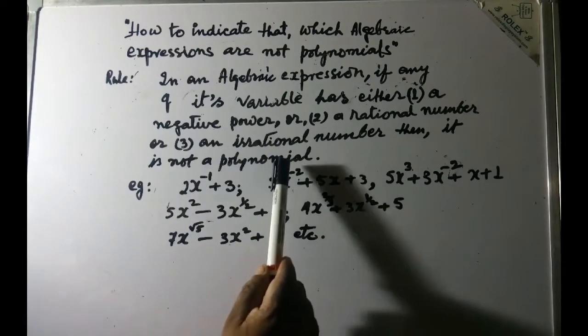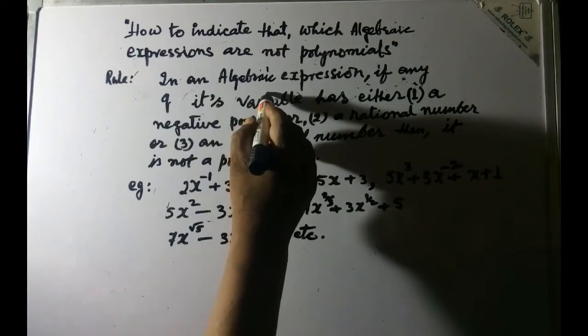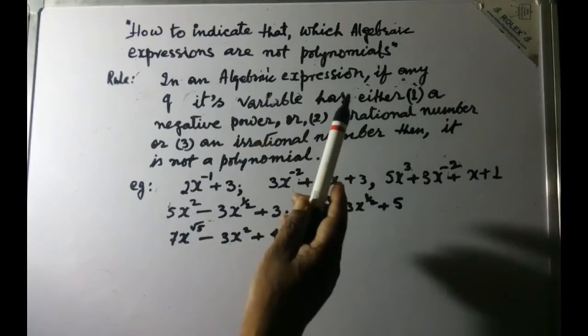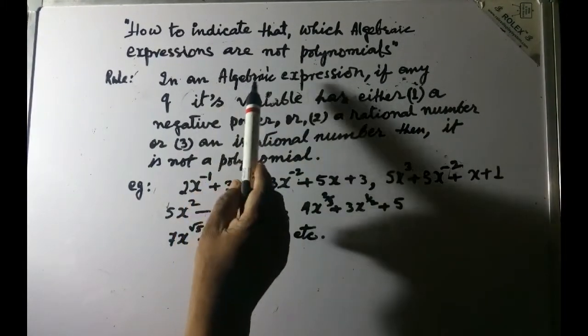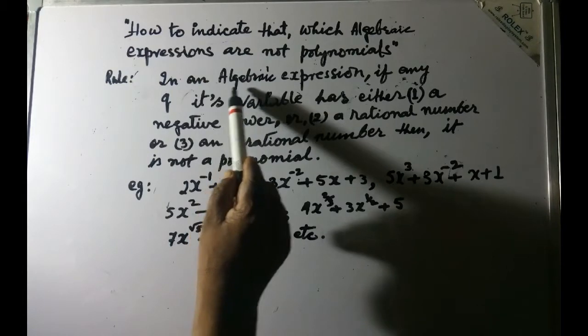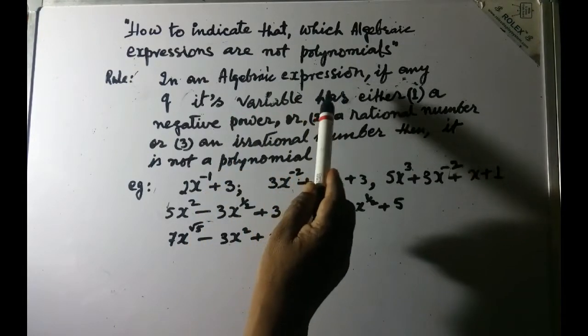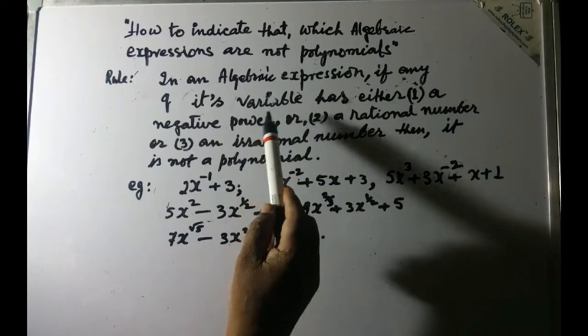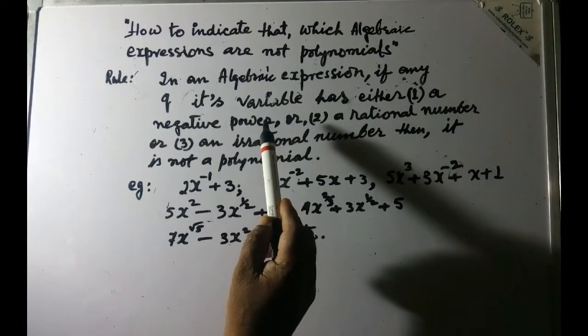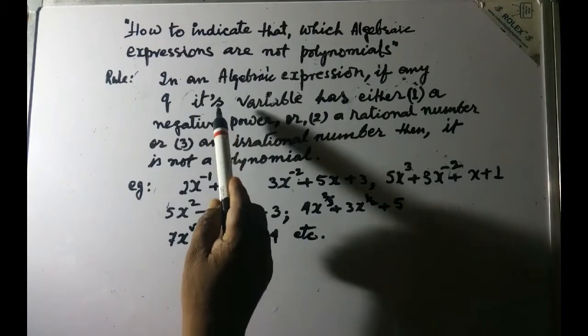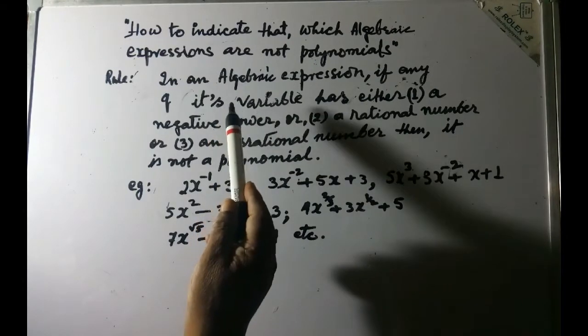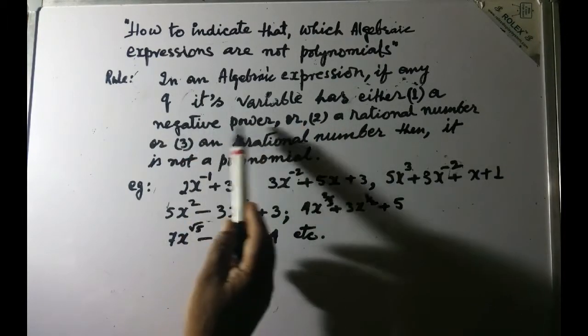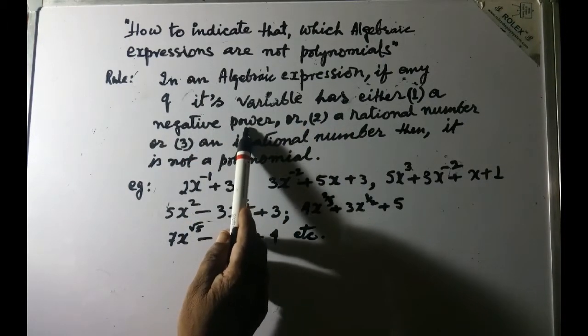So I repeat: it says here first of all you must look at the expression, and in that very expression if you find that any of its variables has negative power, then that means that expression is not a polynomial.